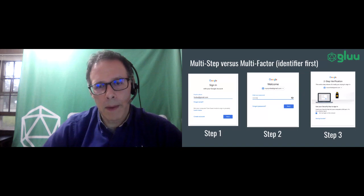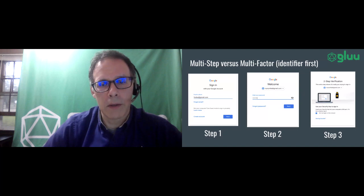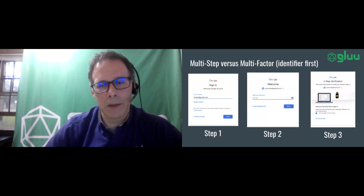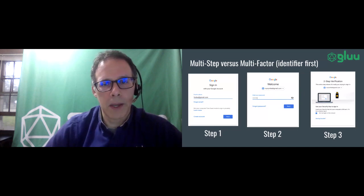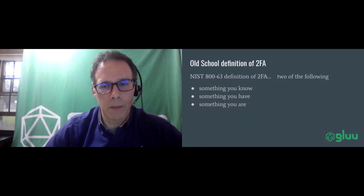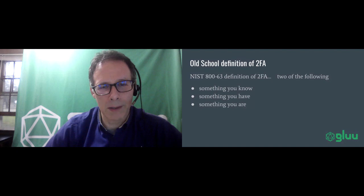People sometimes forget that two factors must be in different categories. For example, with mobile authentication, a push notification and a cryptographic challenge-response are both something you have. To be two-factor, according to the NIST 800-63 definition, they must be two different categories: cognitive, biometric, or possession. Most people know these as something you have, something you are, and something you know.